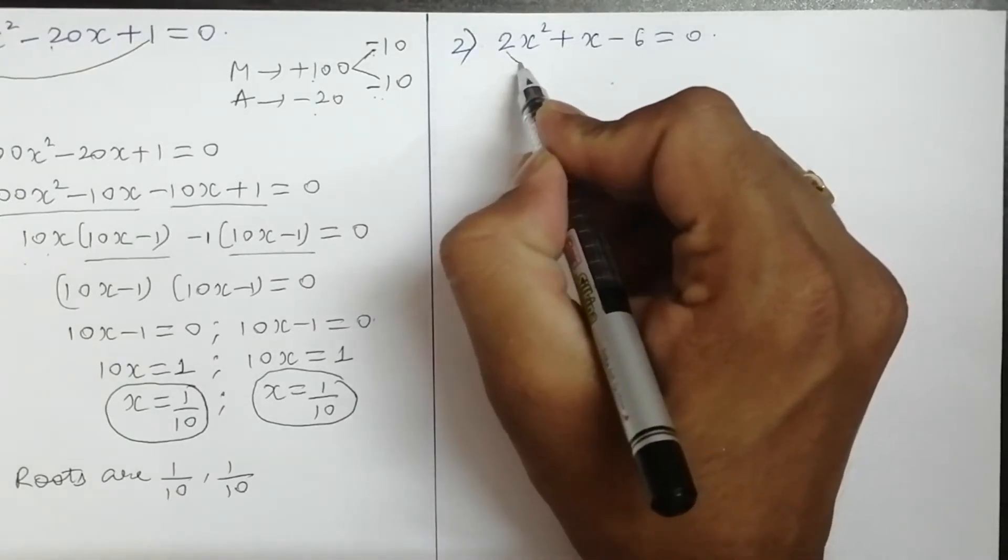The third question is: √2·x² + 7x + 5√2 = 0. Same process — find multiplication and addition. Multiplication = √2 × 5√2 = (√2 × √2) × 5 = 2 × 5 = 10. Addition needed = +7. We need two factors whose product is 10 and sum is 7. Since 2 × 5 = 10 and +2 + 5 = 7, and +2 × +5 = +10, we have our factors.